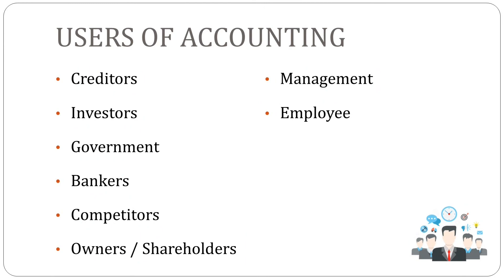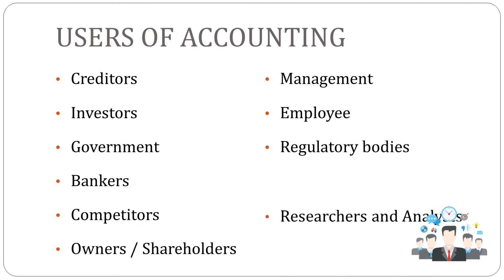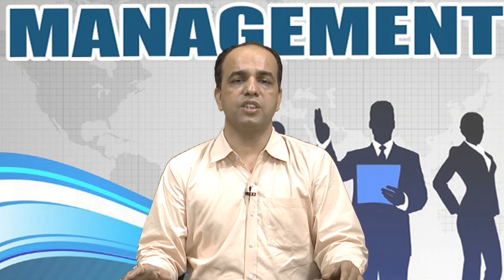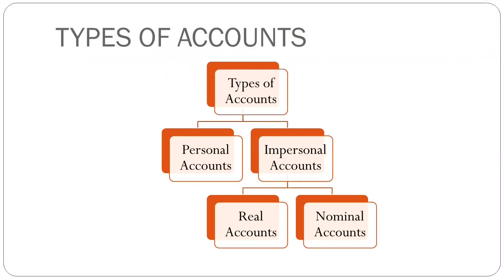Types of Accounts. An account can be explained as a summary record of all transactions related to a particular type of item — it may be assets, liability, income, expense, etc. These accounts are broadly divided into two types: personal accounts and impersonal accounts. Personal accounts include the accounts of persons with whom the business deals. The main purpose of preparing personal accounts is to ascertain the balance due to or due from persons or organizations. Clients, suppliers, money lenders, and banks are examples of personal accounts. Impersonal accounts are divided into two parts: real accounts and nominal accounts.